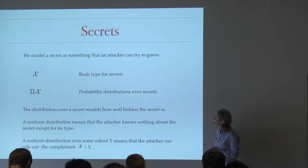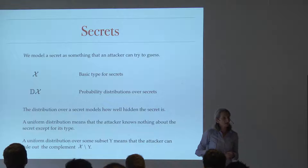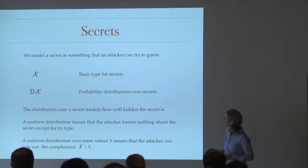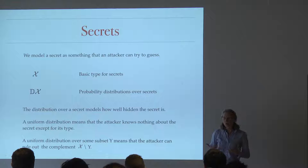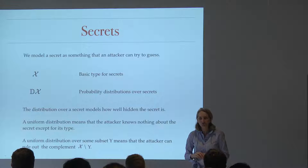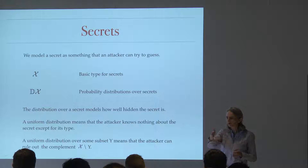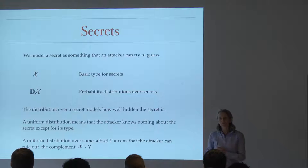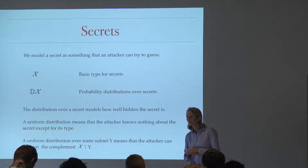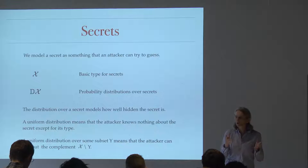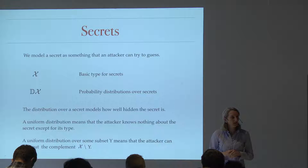We model how safe a secret is by giving it a probability distribution — d-chi for probability distributions over secrets, which are discrete. The distribution models how secret the secret is. If you've got a uniform distribution, the attacker doesn't know anything about the secret because whatever he chooses, he's got the same chance as any other. But if you've got some more informed prior knowledge — if it's passwords — you might say most people set their passwords to names of their cats or dogs, so you'd give more weight to those and less to other words.